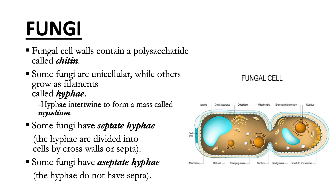Although many fungi are unicellular — for example, yeasts and microsporidia — others grow as filaments called hyphae, which intertwine to form a mass called mycelium. Some fungi have septate hyphae, meaning the cytoplasm within the hyphae is divided into cells by crosswalls or septa, whereas others have aseptate hyphae, meaning the cytoplasm is not divided into cells. Whether a fungus possesses septate or aseptate hyphae is an important clue when identifying a fungus isolated from a clinical specimen.